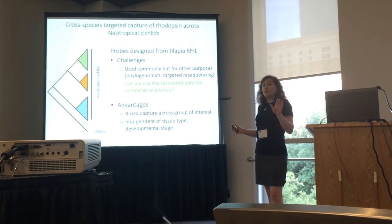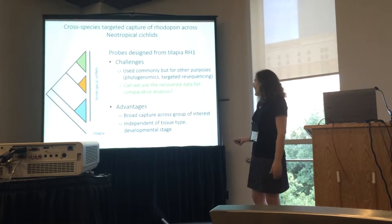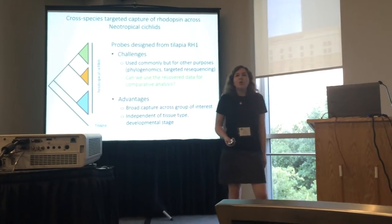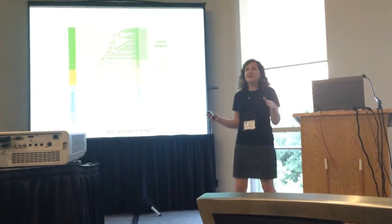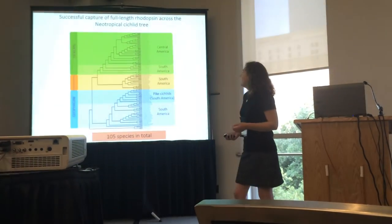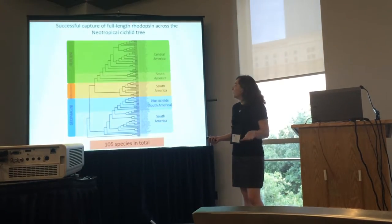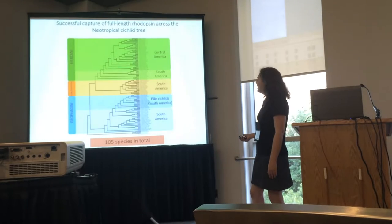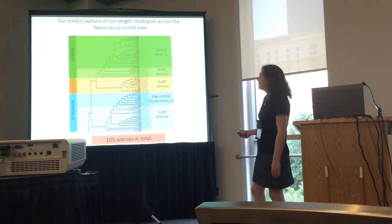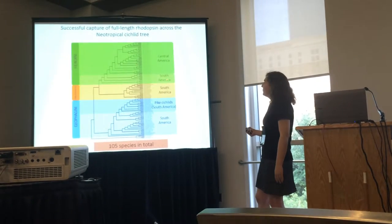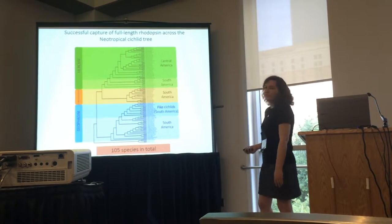If this did work, we would achieve broad capture across our group of interest, and capture would be independent of tissue type or developmental stage. Fortunately, it did work out. We successfully captured full-length rhodopsin across the neotropical cichlid tree — 105 species in total, with representatives from every major clade of neotropical cichlids, including representatives from Central America and specialists such as these predatory pike cichlids.